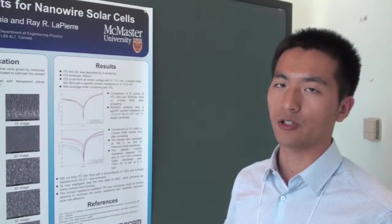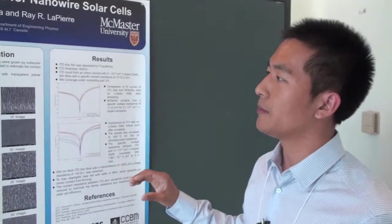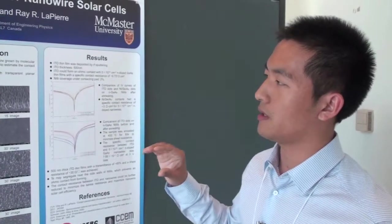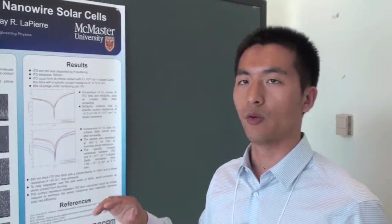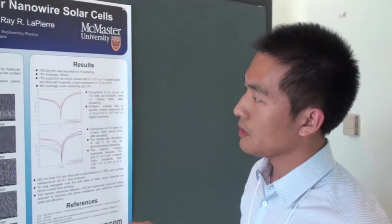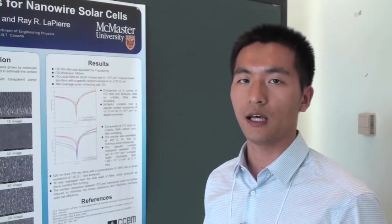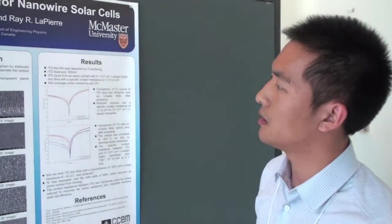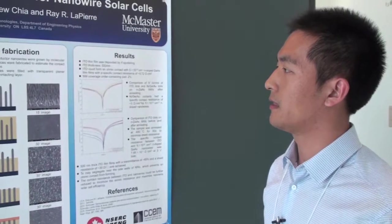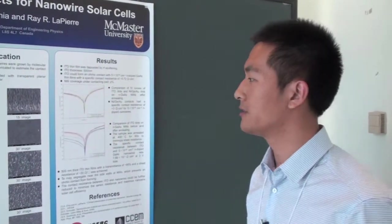The traditional contact layer is nickel germanium gold. But nickel germanium gold is opaque, so we cannot use it for concentrated PV. So we decided to use ITO, which has very high transmittance in visible light and has very good contact with semiconductors.